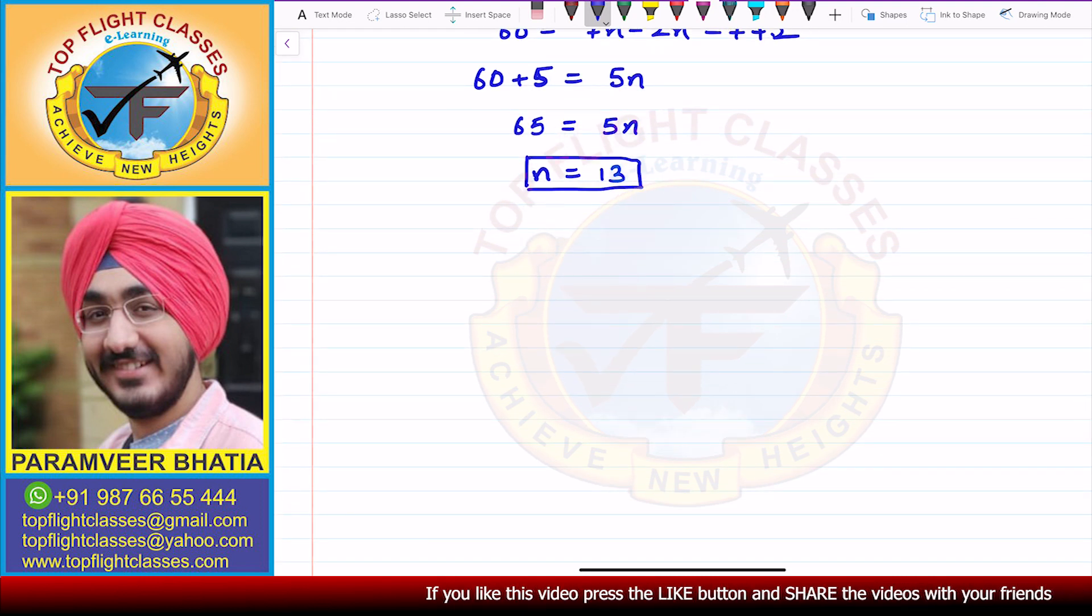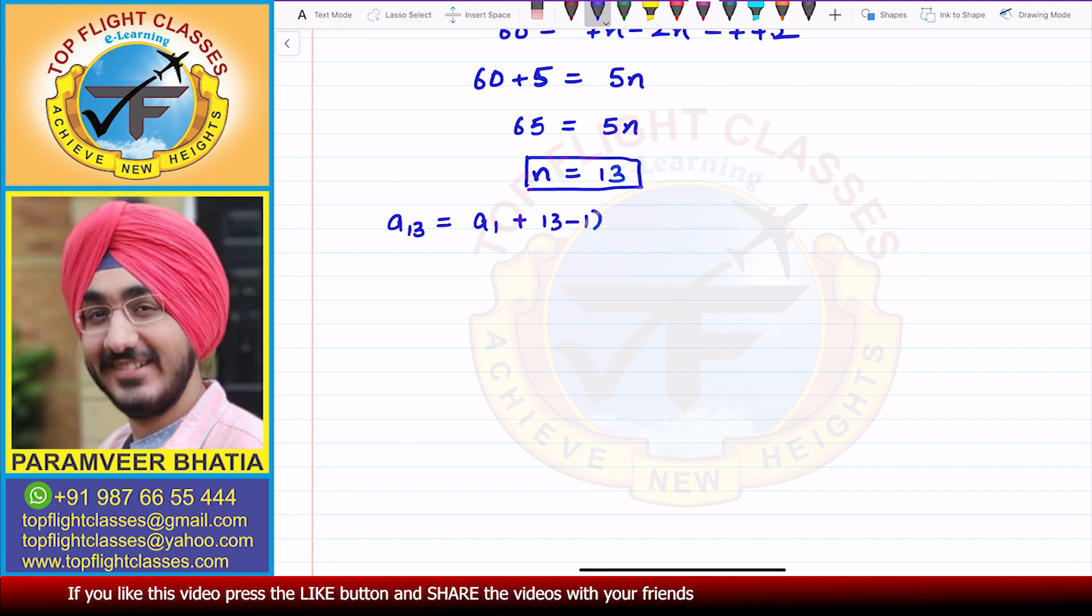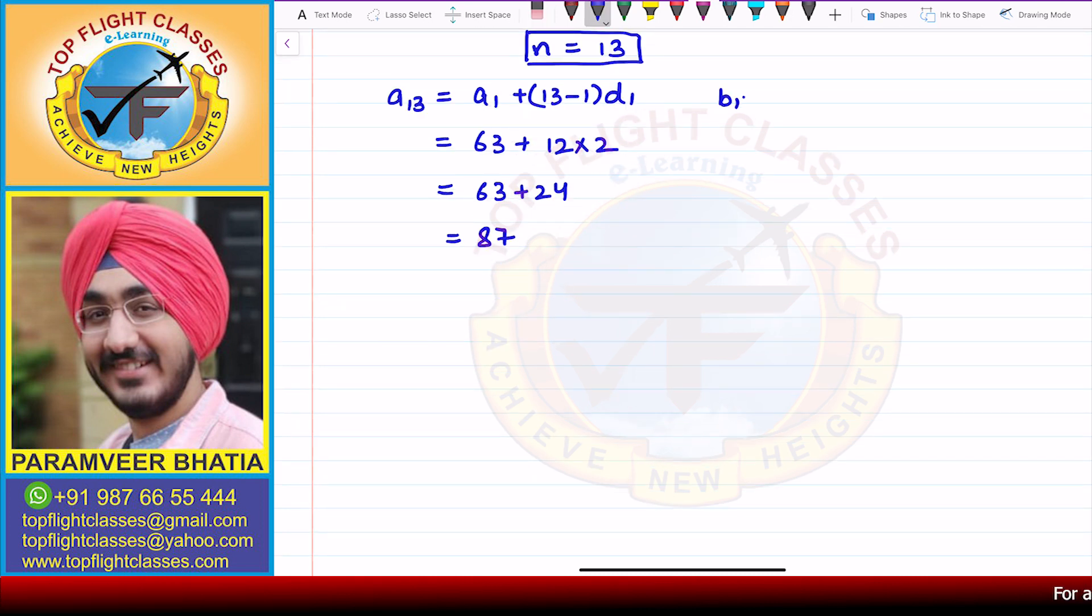If you have to verify, for verification, if we have A13, that will be A1 plus 13 minus 1 times D1. So that will be 63 plus 12 into 2, so that will give me 63 plus 24, which will be equal to 87. And if we have B13,